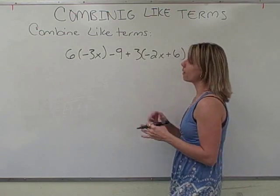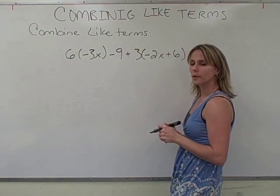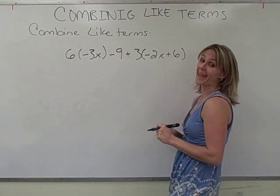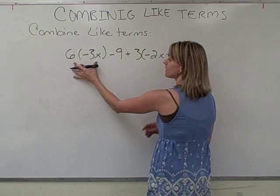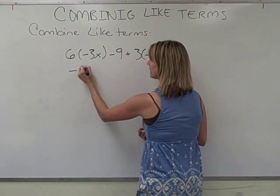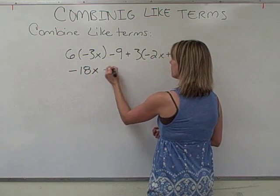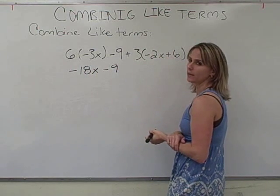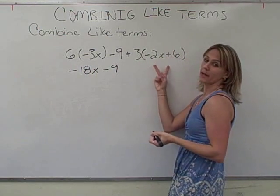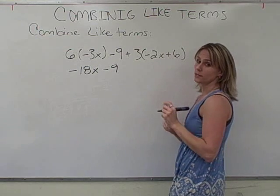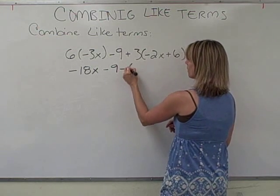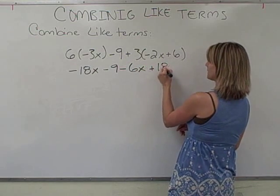This next example has a couple things going on. We've got to do a little bit of multiplication before we can combine anything. We're going to have 6 times negative 3X, that's going to give us a negative 18X. That 9 is by itself, so it'll stay. The 3 is being multiplied by two terms here using that distributive property. So we'll have negative 6X plus 18.